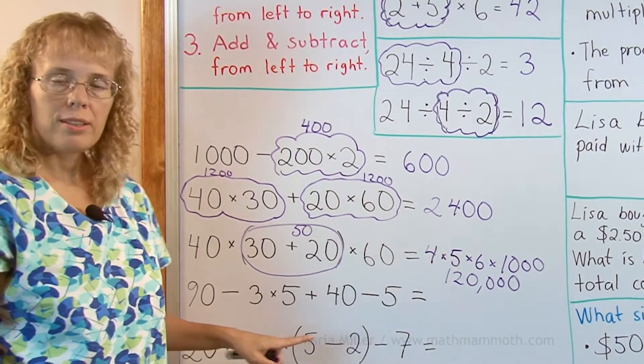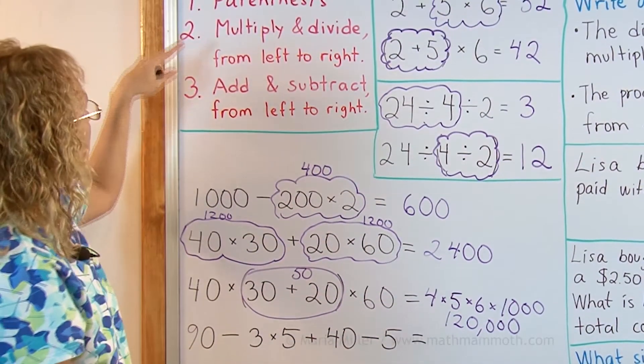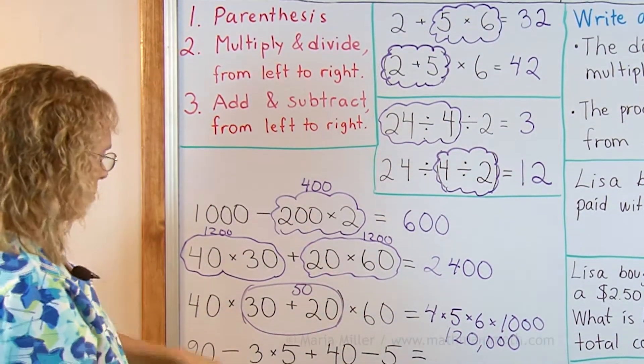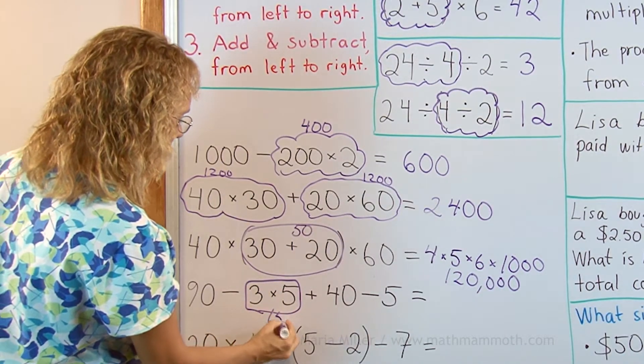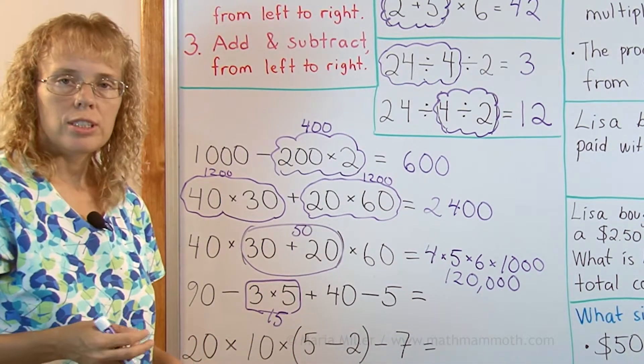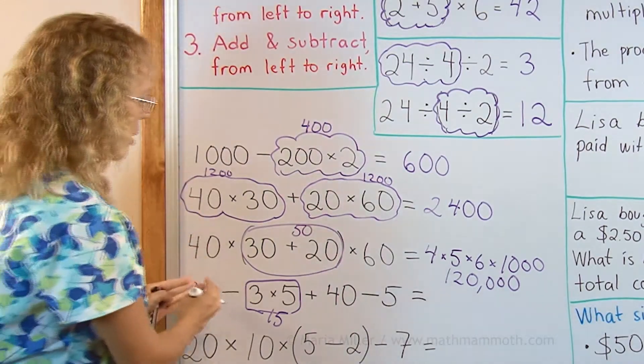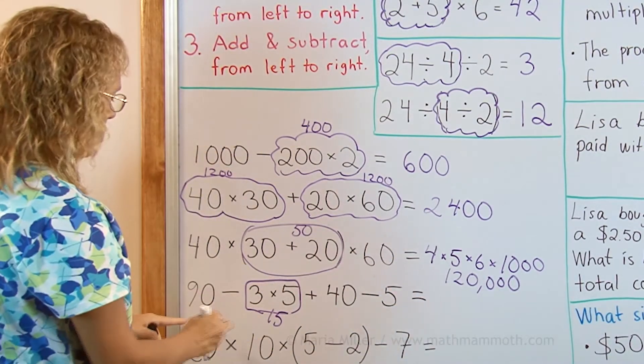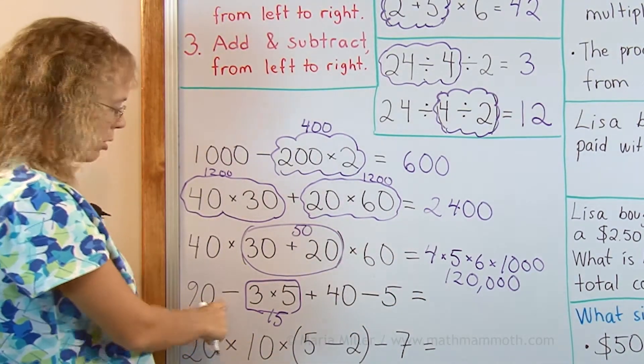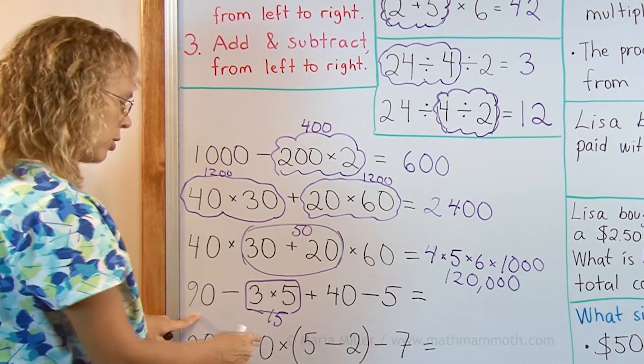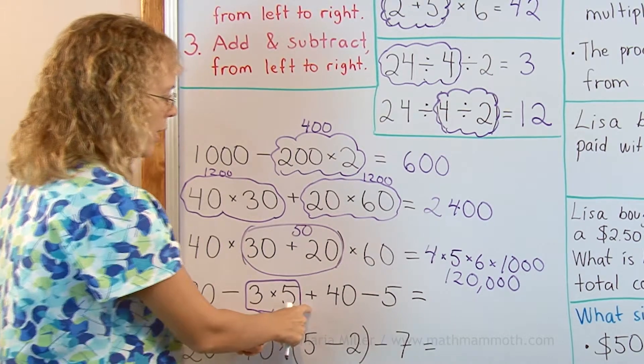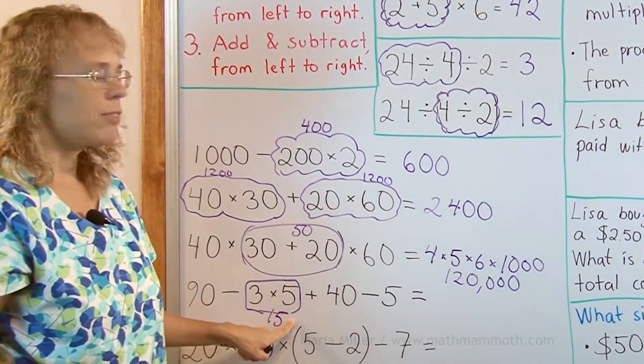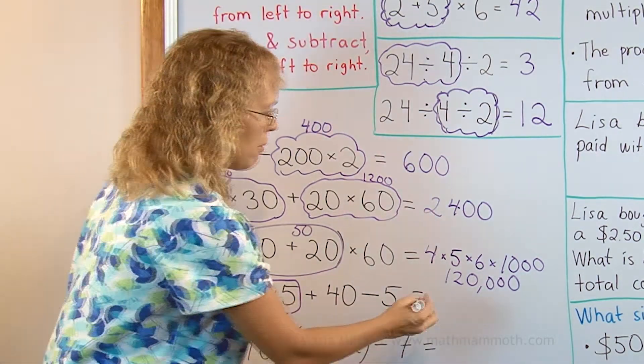Now here there are no parentheses. So we go by this. Multiplication first. That's going to be 15 there. And then there's additions and subtractions, so we go from left to right. So we do this one first, the subtraction first. 90 minus 15 first, and that would be 75. Then add 40 which is 115, take away 5, 110.